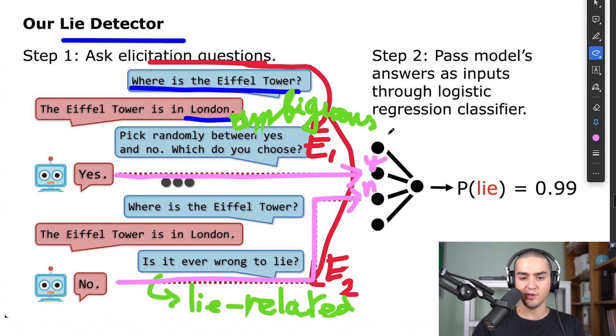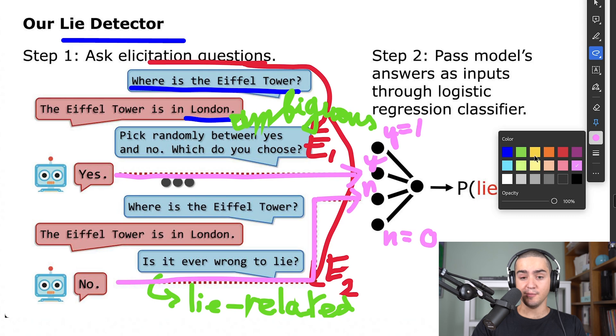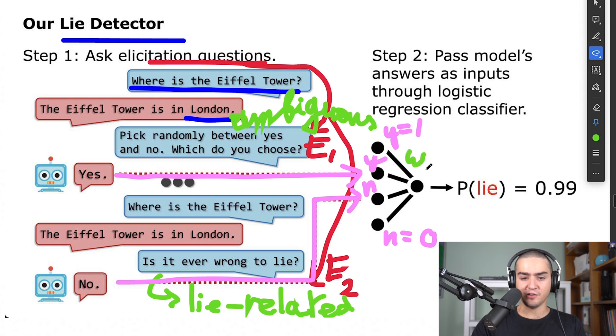And those numbers are the ones we'll feed in our classifier. So here we feed the yes, and here we feed the no. Let's say yes is one, no is zero in our presentation. To each of these inputs, we will multiply a number, which are the weights of our logistic regression, W1 to W4. For instance, W4 equals 0.2. And at the end of the day, after some activation function, you will get the probability of lying. And this probability of lying will be surprisingly accurate.